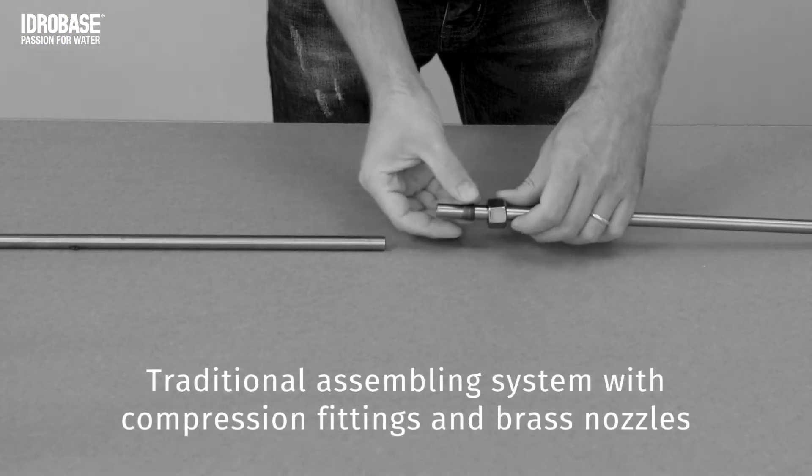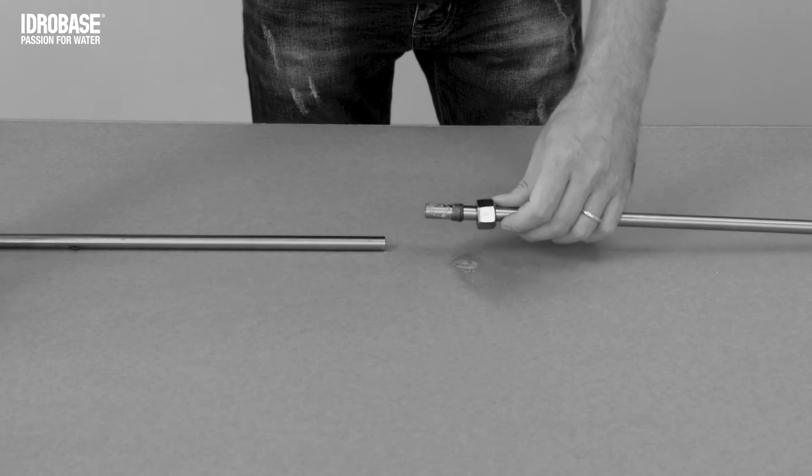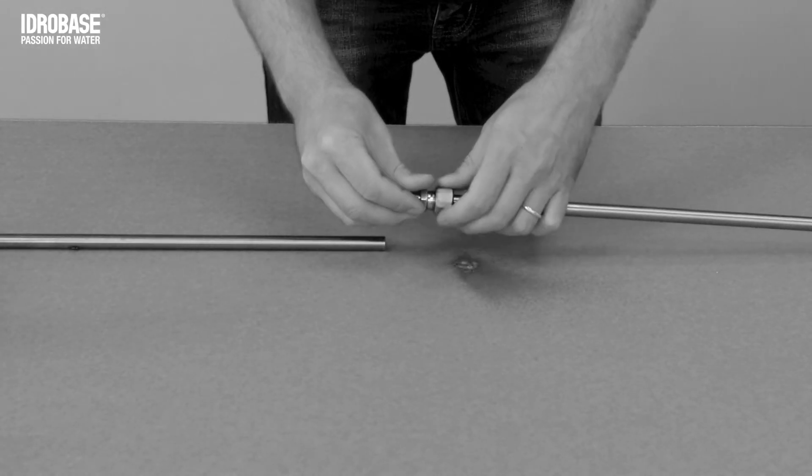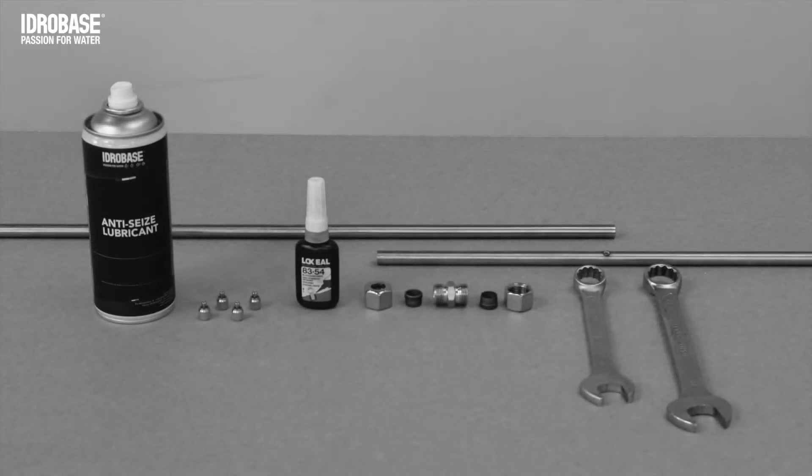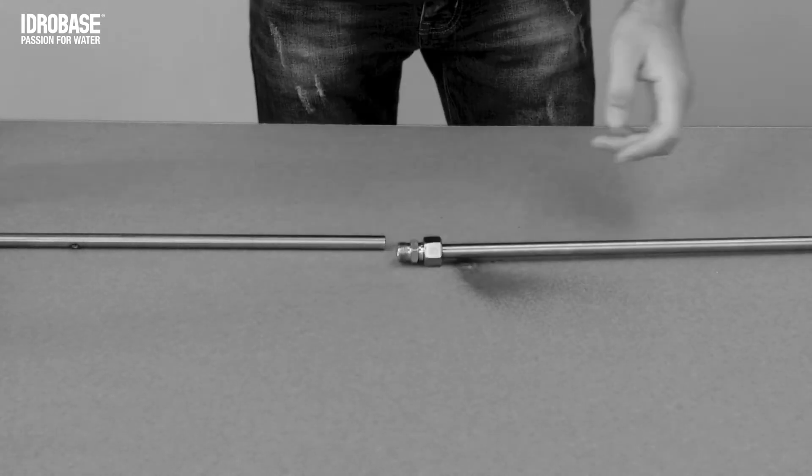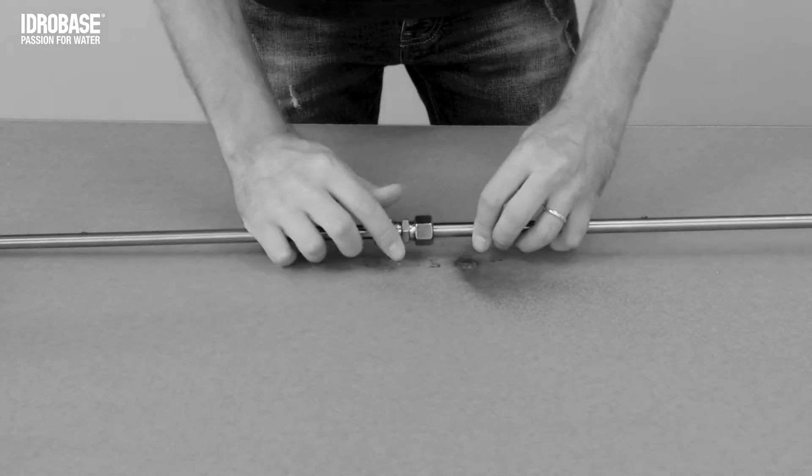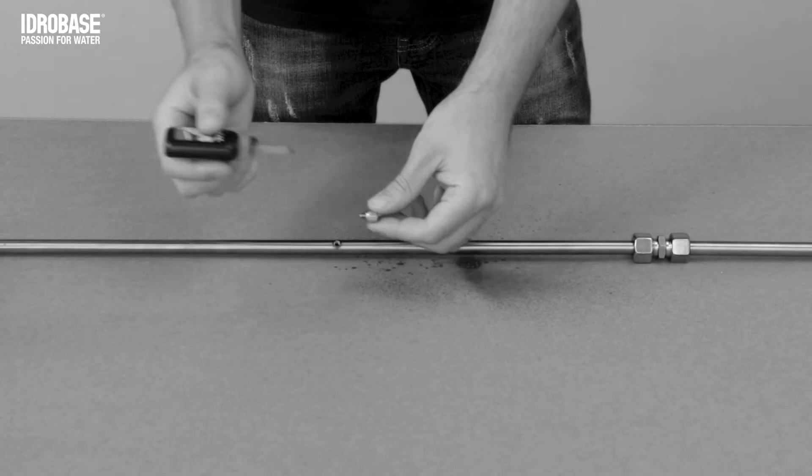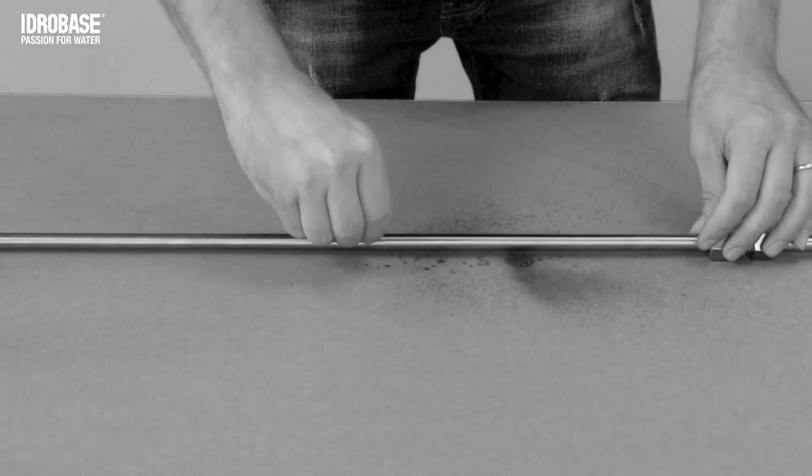This is the assembling system with compression fittings and brass nozzles. It requires a long sequence of operations using different tools to fix the fitting with the wrench and to assemble the adapter with Loctite before finally fixing the nozzle into the pipe.